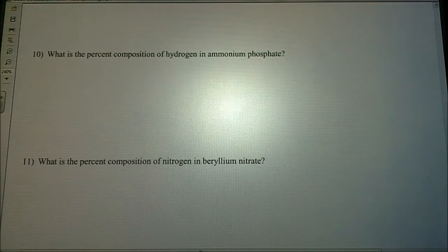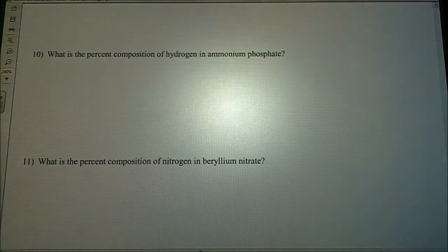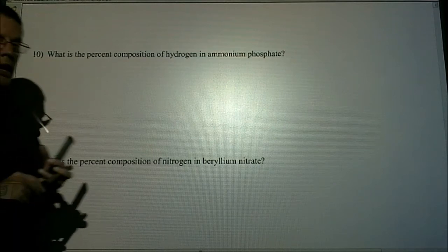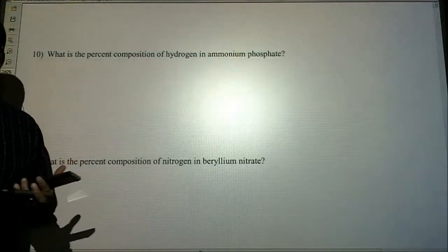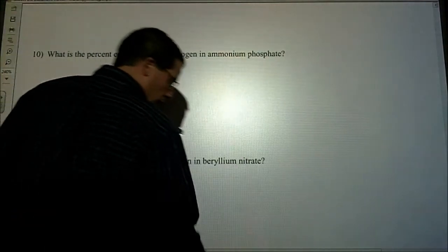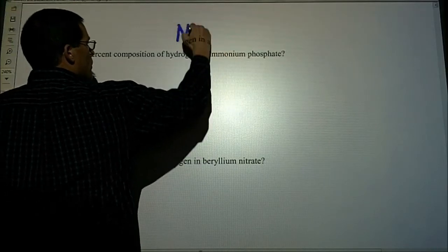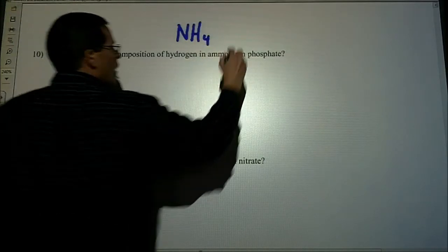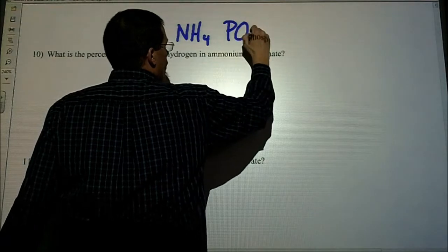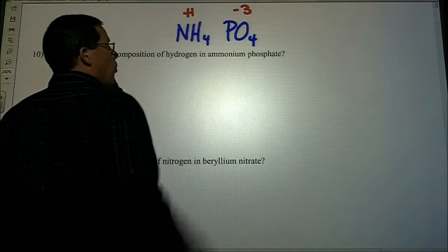Looking at number 10, the question is asking, what is the percent composition of hydrogen in ammonium phosphate? In this case, it's not asking you to determine each of the elements. First and foremost, we have to write the correct formula for ammonium phosphate. Ammonium, NH4, phosphate, PO4. Now remember the charges. Phosphate, negative 3, ammonium, plus 1.